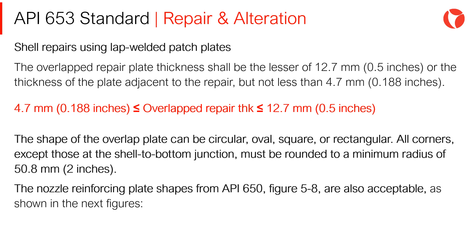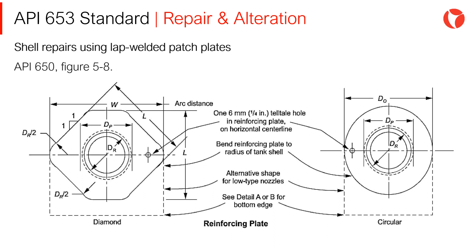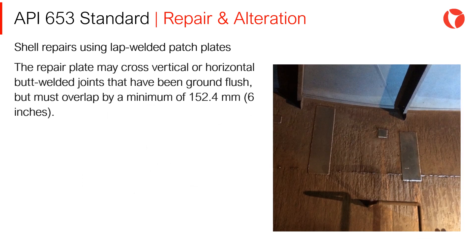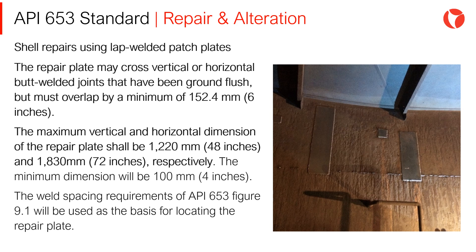The diamond shape shown on the left is an acceptable form for reinforcing plates. The repair plate may cross vertical or horizontal butt-welded joints that have been ground flush, but must overlap by a minimum of 152.4 mm. The maximum vertical and horizontal dimensions of repair plates shall be 1220 mm and 1830 mm respectively. The minimum dimension will be 100 mm (4 inches). The weld spacing requirements of API 653 figure 9.1 will be used as the basis for locating the repair plate.